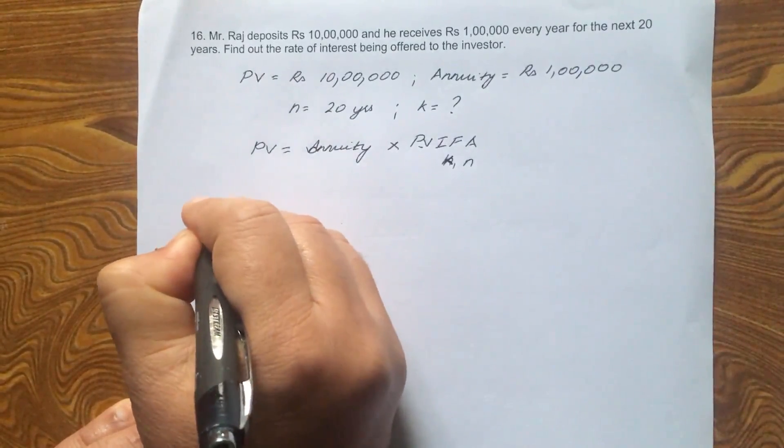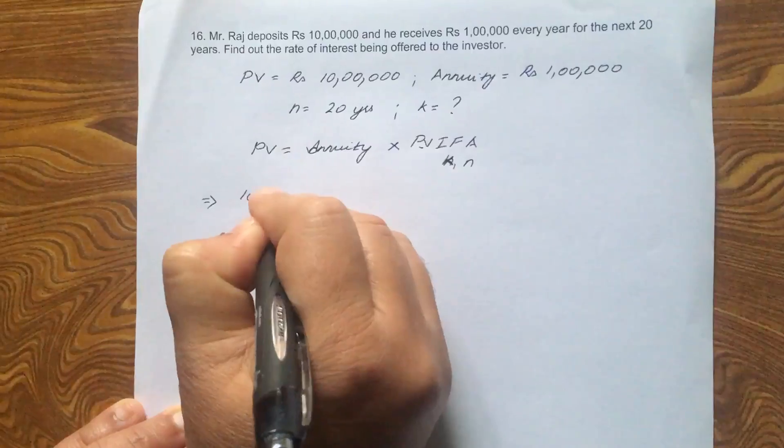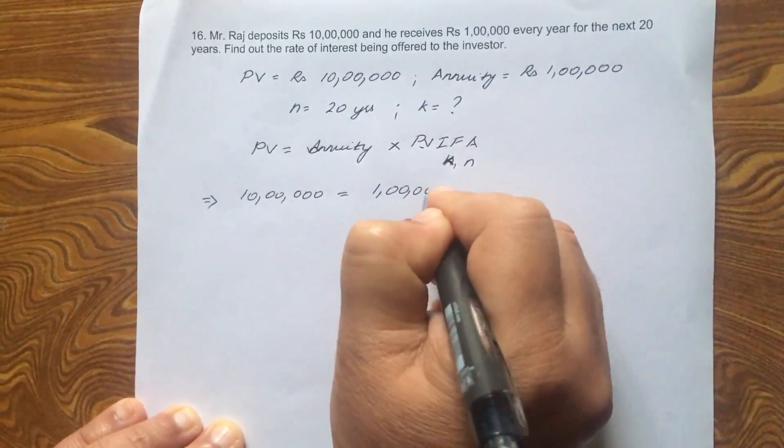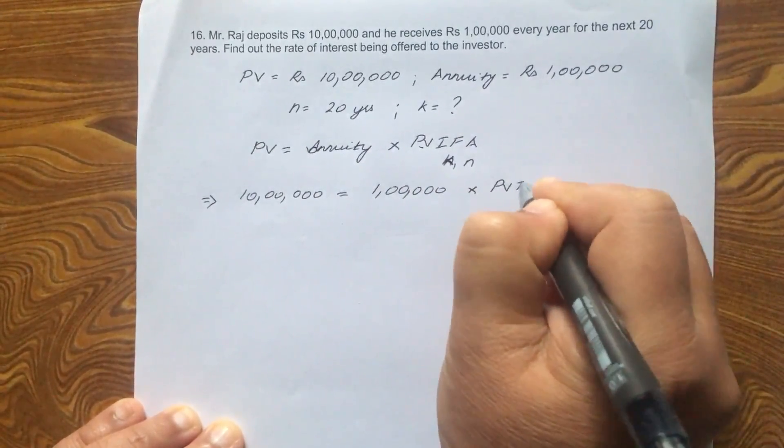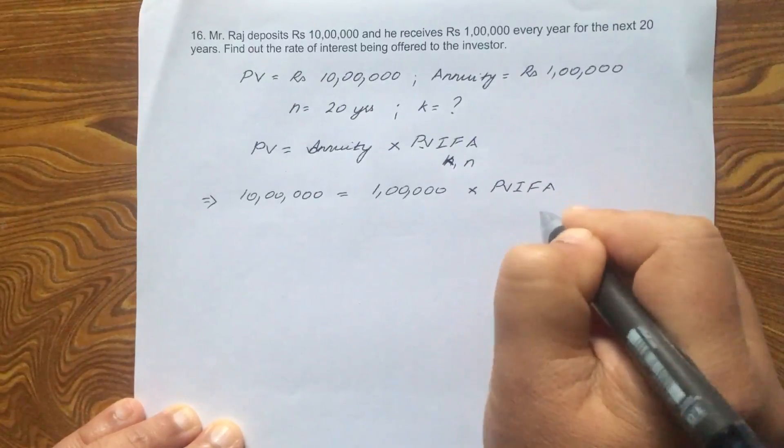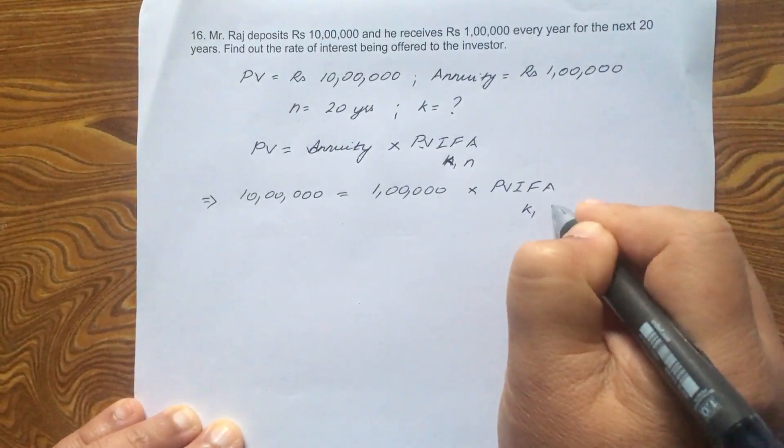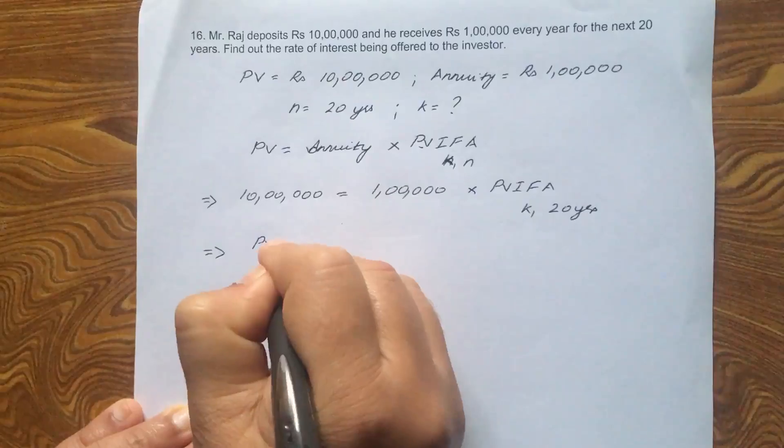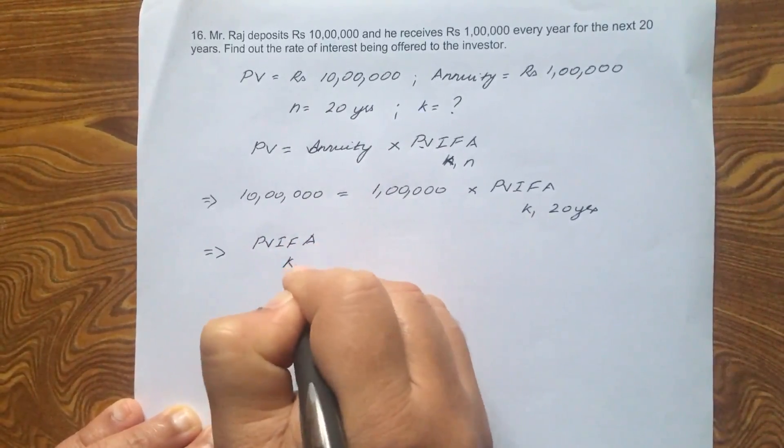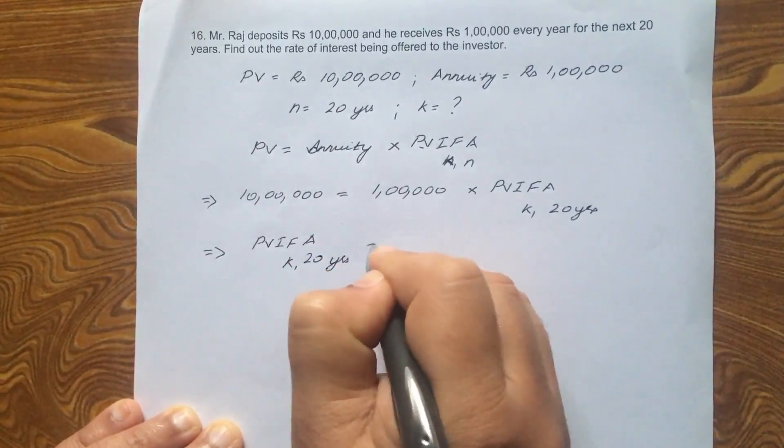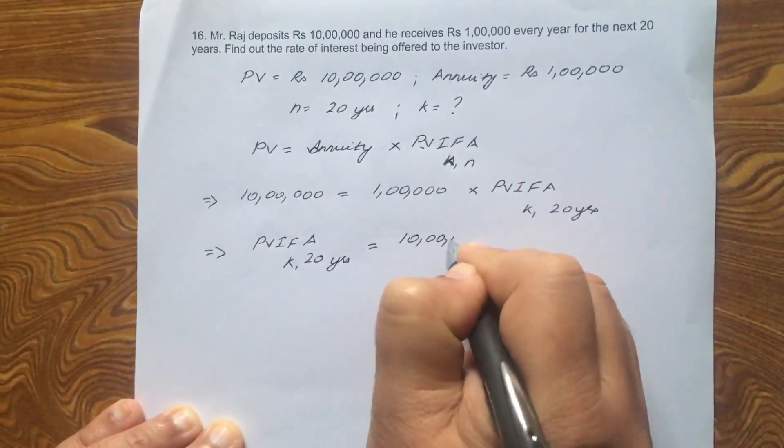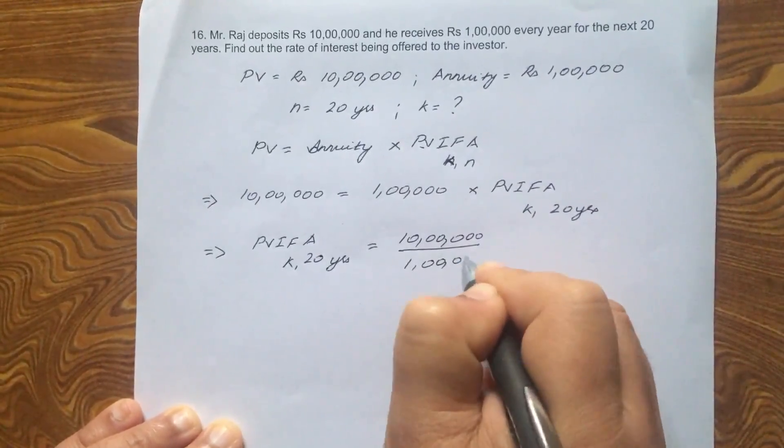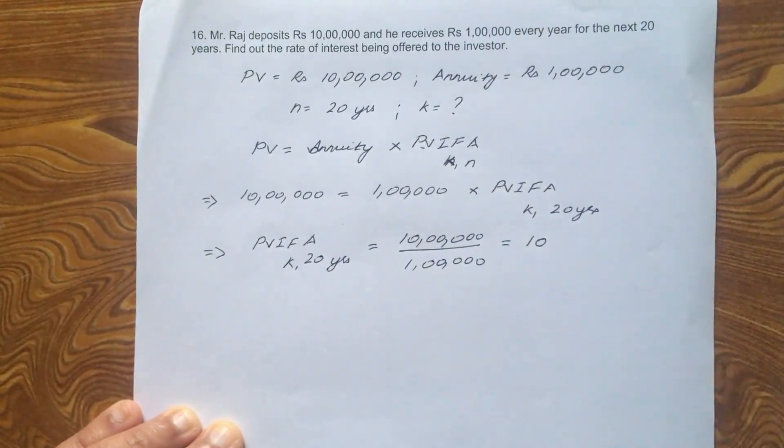So we know what is present value is 1 million or 10 lakhs and annuity is 100,000 or 1 lakh into PVIFA. We need to find out what is K. We know what is N, 20 years. So PVIFA K 20 years is equal to 1 million divided by 100,000 equals to 10.